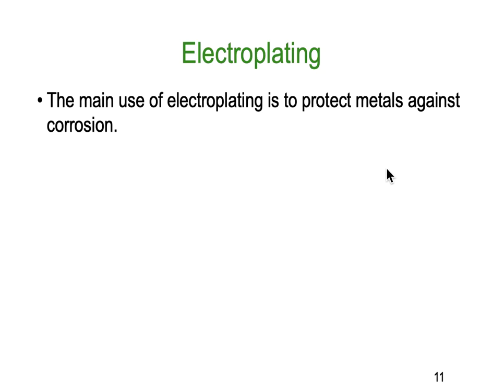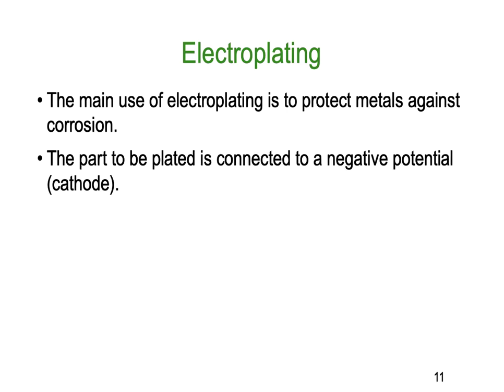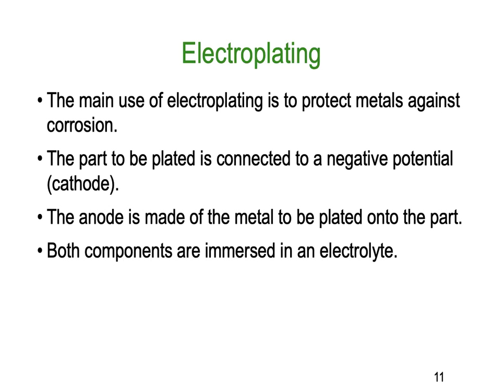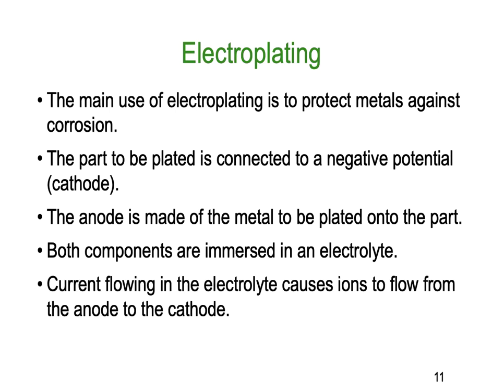The other place we use the chemical effect is electroplating. The main use of electroplating is to protect materials against corrosion — for example, plating silver onto soft iron to protect it. The part to be plated is connected to the negative or cathode, and the anode is made of the metal to be plated onto the part. Both components are immersed in the electrolyte. Current flowing through the electrolyte causes ions to flow from the anode to the cathode, and you end up plating the cathode with the material from the anode.